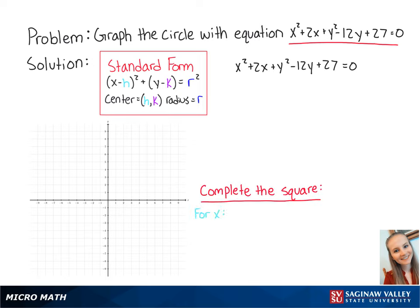To complete the square for x, we take the coefficient of x, which is 2, multiply it by 1 half, which is equal to 1, then we take 1 and we square it, which is equal to 1. So now we know that we need to add 1 to both sides of the equation.